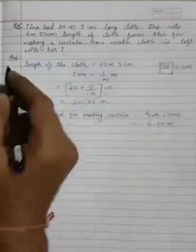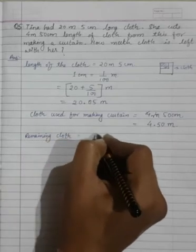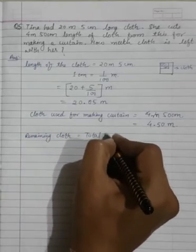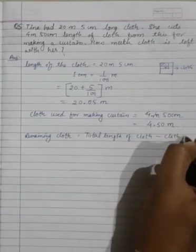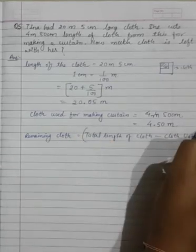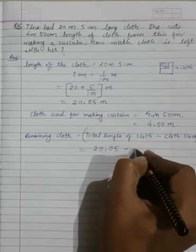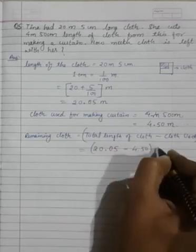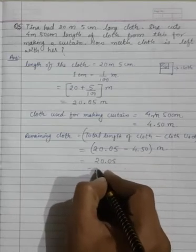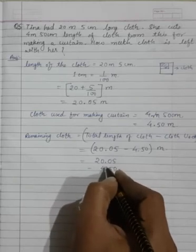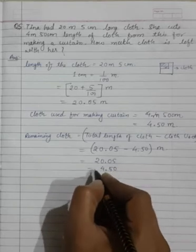Now the question is how much cloth is left. So the remaining cloth will be total length of cloth minus the cloth used. The cloth used for making curtain. So this will be 20.05 meters. So we can do like this 20.05 minus 4.50 meters. Place the decimal one after the another or one before the other so that you can solve the question very easily.